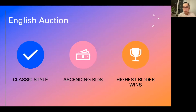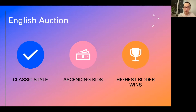The English auction is your traditional style of auction — the highest bidder wins. People outbid each other with ascending bids, higher and higher prices. The classic going once, going twice, sold.